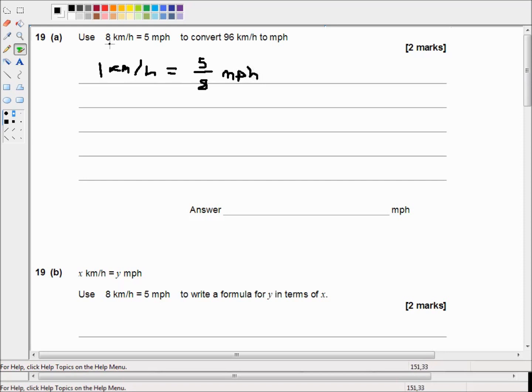So 96 kilometers per hour is equal to 96 times 5 divided by 8 miles per hour.